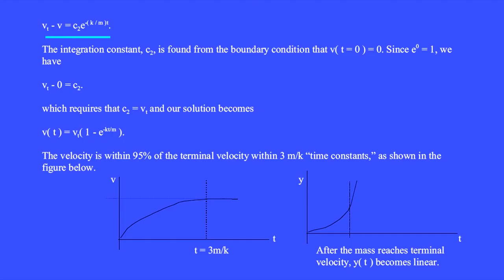The integration constant c2 is found from the boundary condition that the velocity at t equals zero equals zero. Since e to the zero equals one, we have vt minus zero equals c2, which requires that c2 equals the terminal velocity. And our solution becomes v as a function of time equals the terminal velocity times 1 minus e to the minus kt over m.